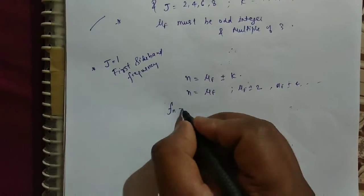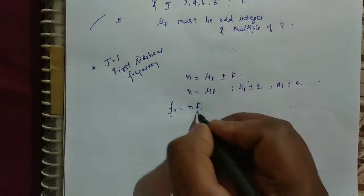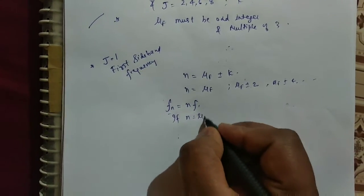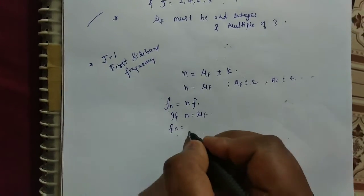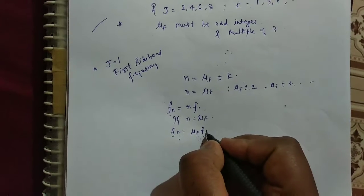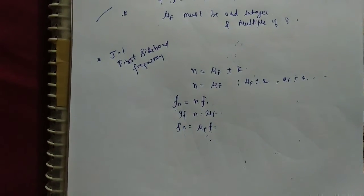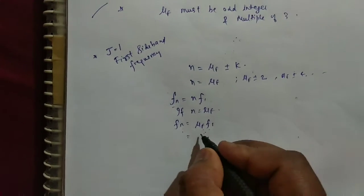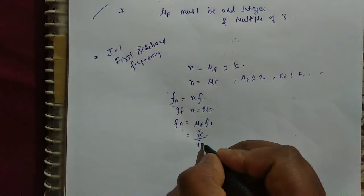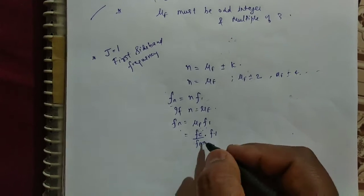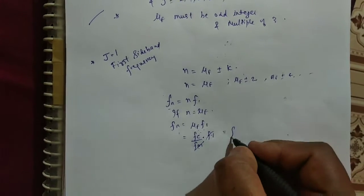So μ_F plus minus K. So n is equal to μ_F, μ_F plus minus 2, μ_F plus minus 4, like this. Therefore F_n is equal to n times F1.